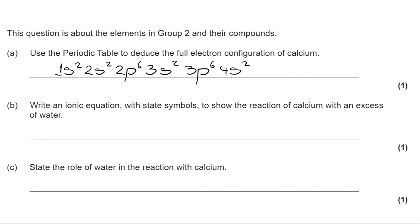So hopefully what you've got is 1S2, 2S2, 2P6, 3S2, 3P6, 4S2. As a very quick check, you can clarify on the periodic table that because it ends in 4S2, calcium is in the right-hand side of the S sublevel, or the S block.